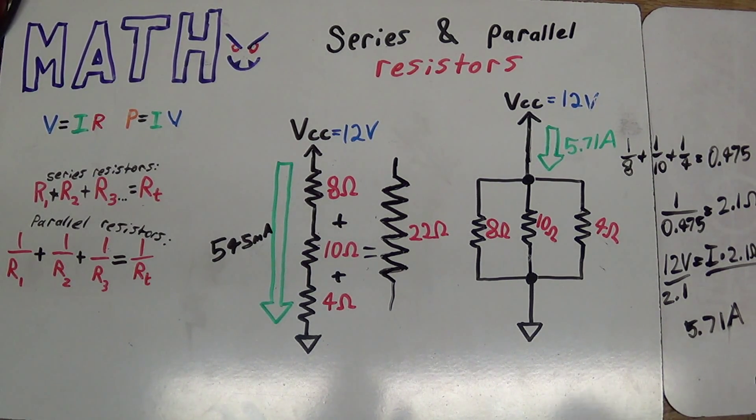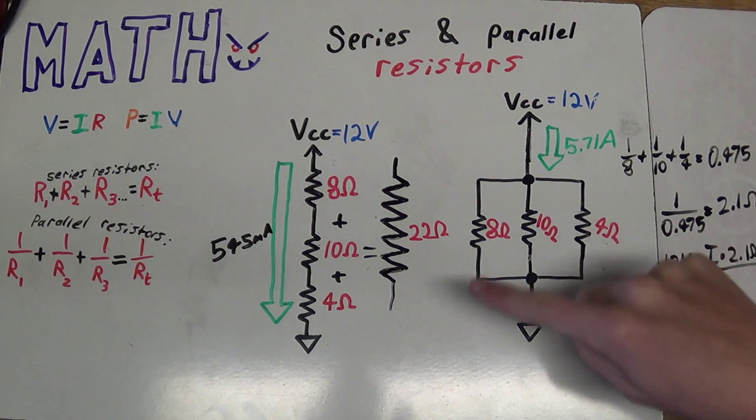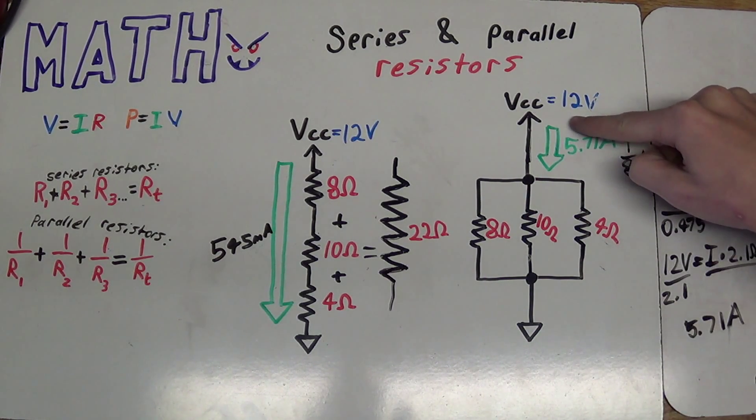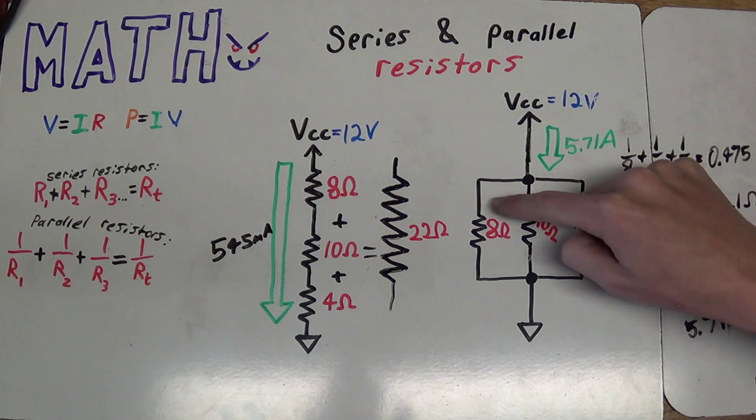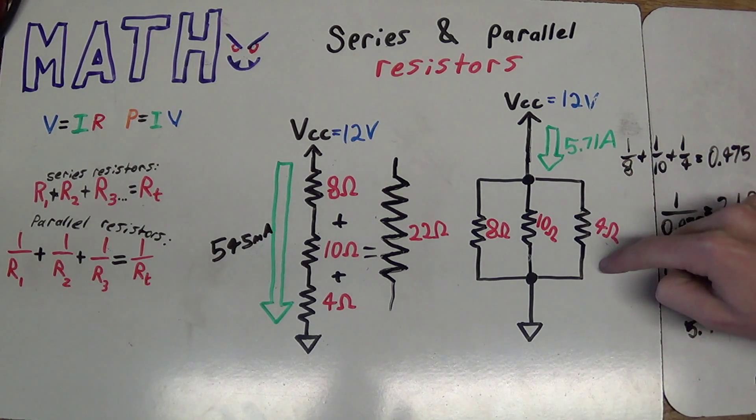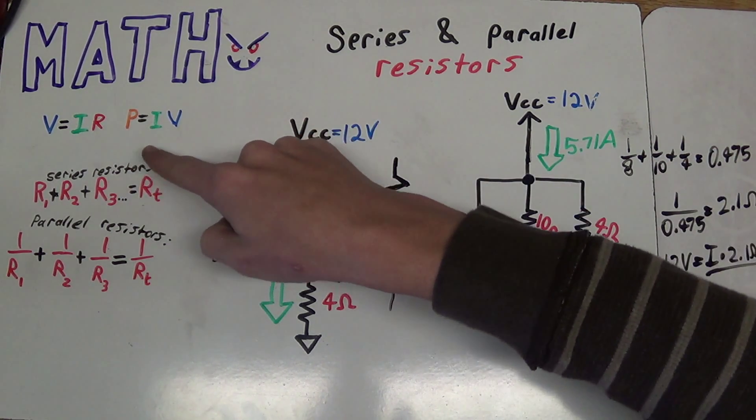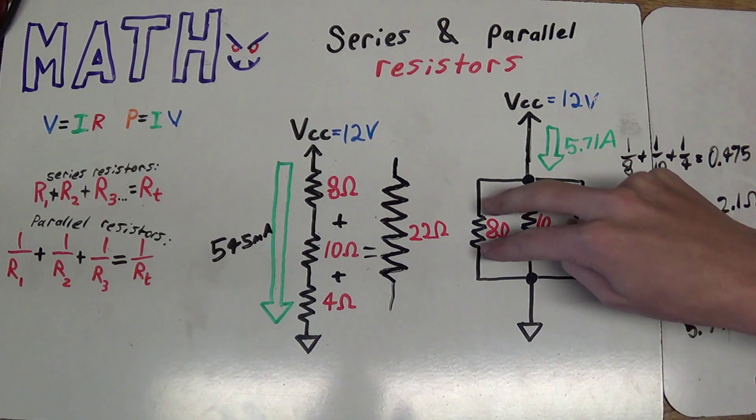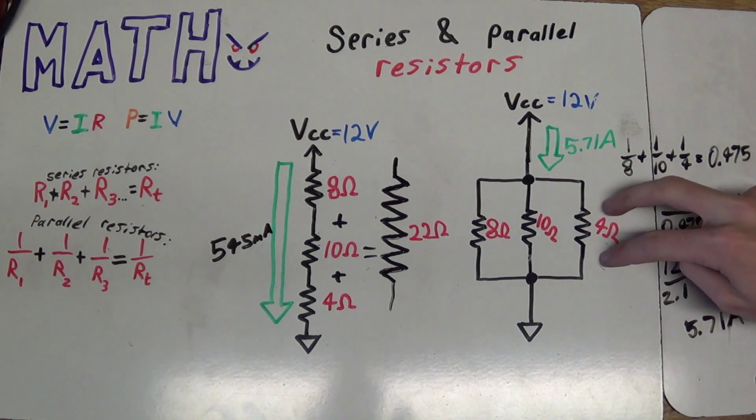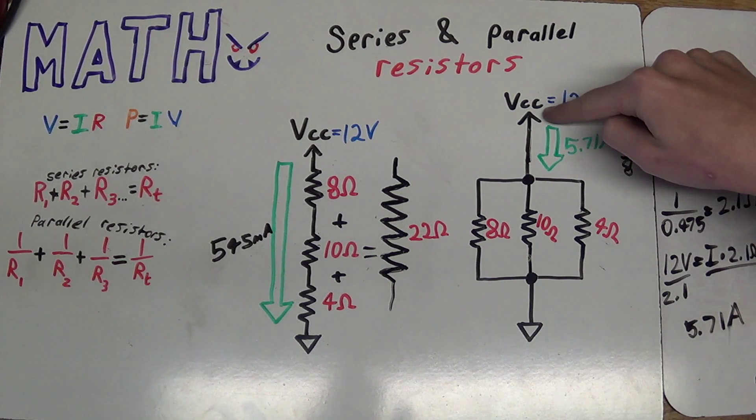So I figured out a grand total of 5.71 amps of current. Now, if you've been paying attention, you'd know that because this is a parallel circuit, and because we have a constant voltage source right here, we'll actually have 12 volts across every resistor. And you can actually just use Ohm's law by itself, and figure out what the current going through each one of these resistors are, and then just add up the resistors to find out what the current coming from your power supply is going to be.